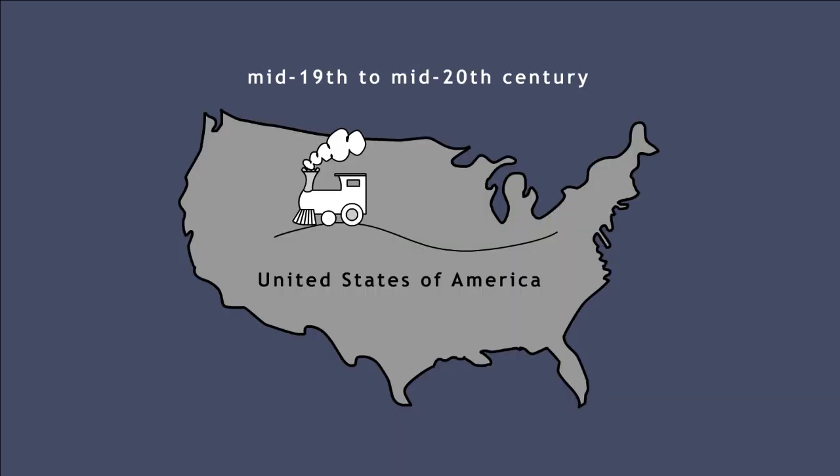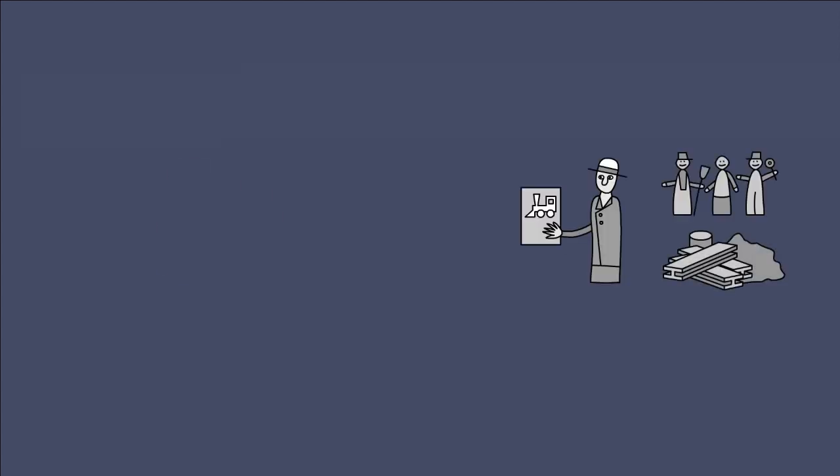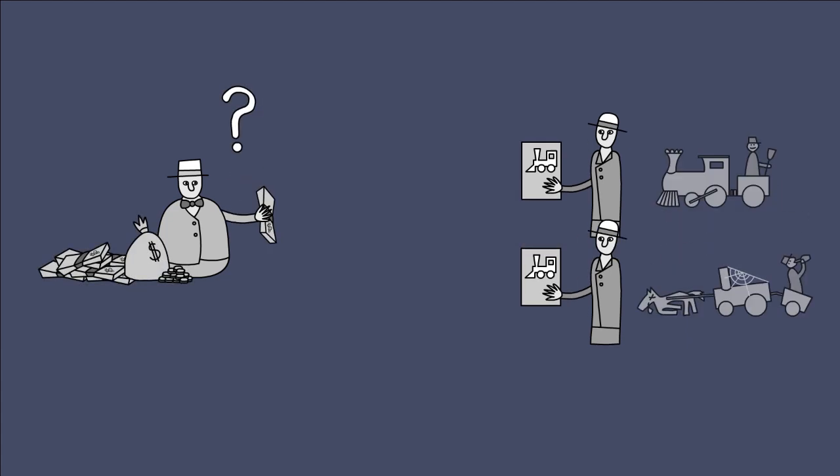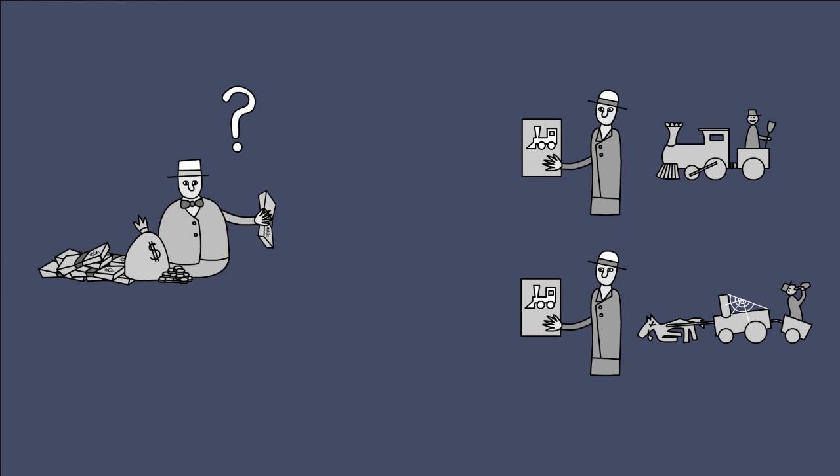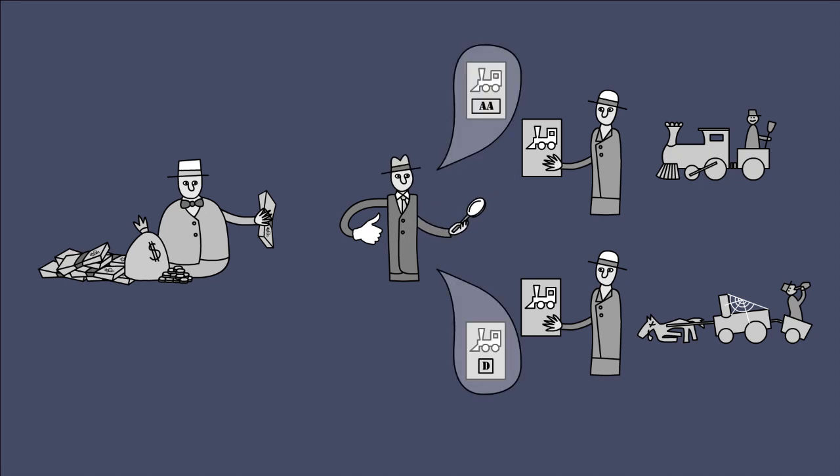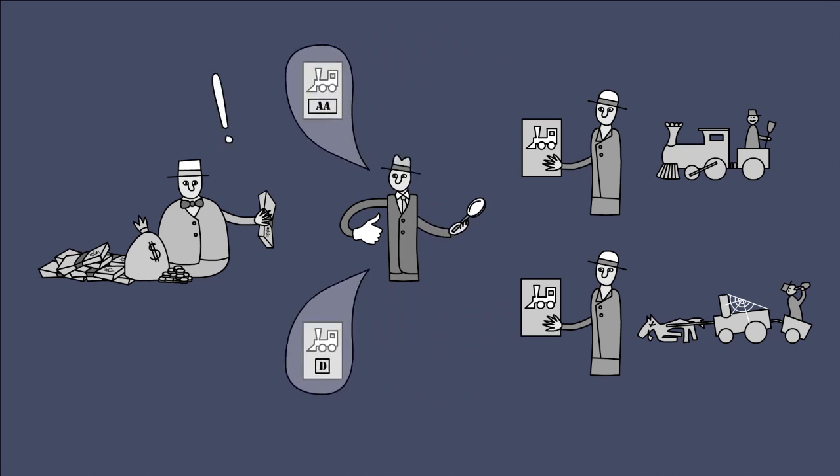Credit rating agencies were created during the railroad construction era. Railway companies needed loans to pay for workers and material. Investors sought opportunities to invest their money profitably but did not know which entrepreneurs would be able to repay the loans with interest. Rating agencies were created to assess the creditworthiness of companies. The result of these evaluations were then sold to investors in the form of credit ratings.